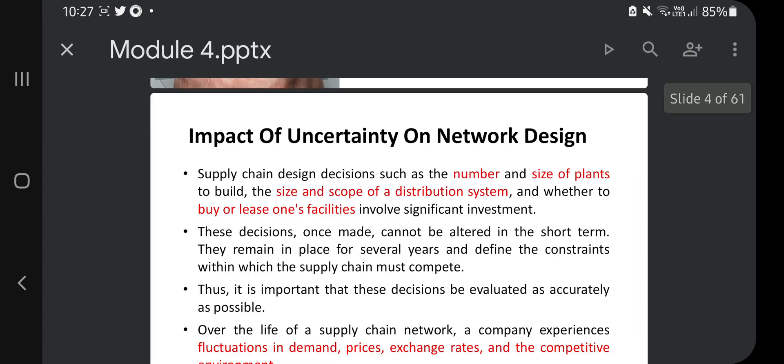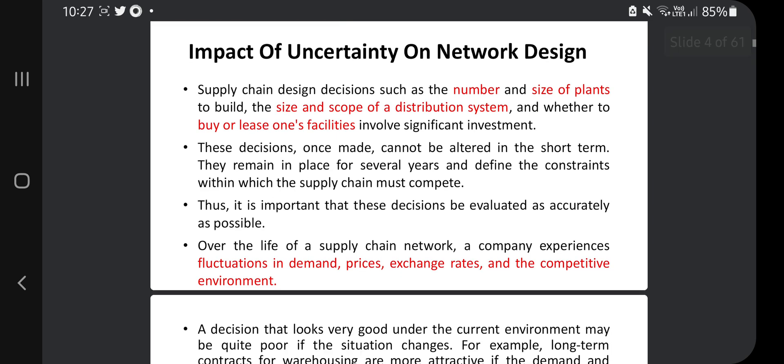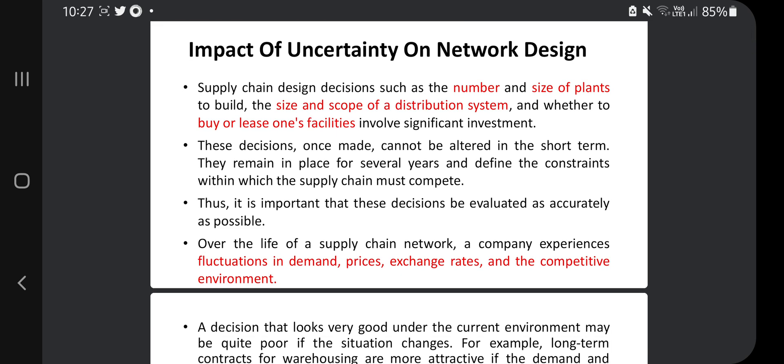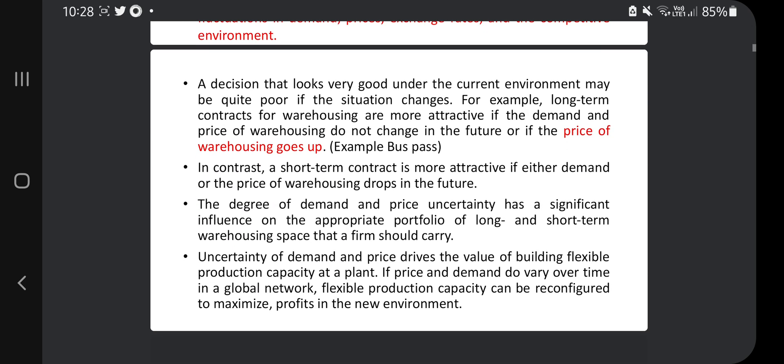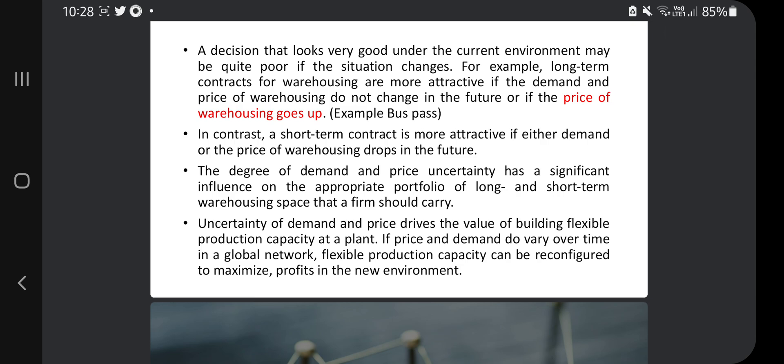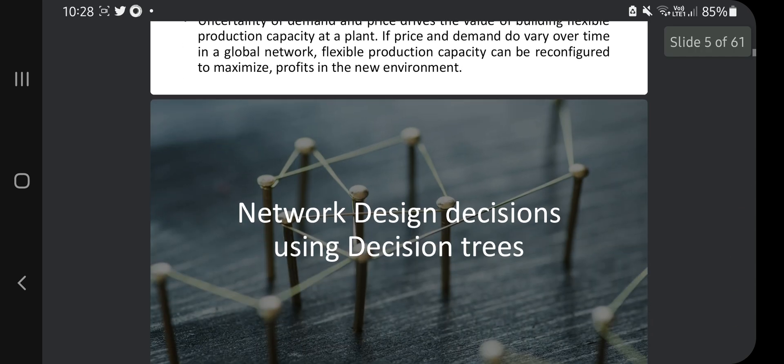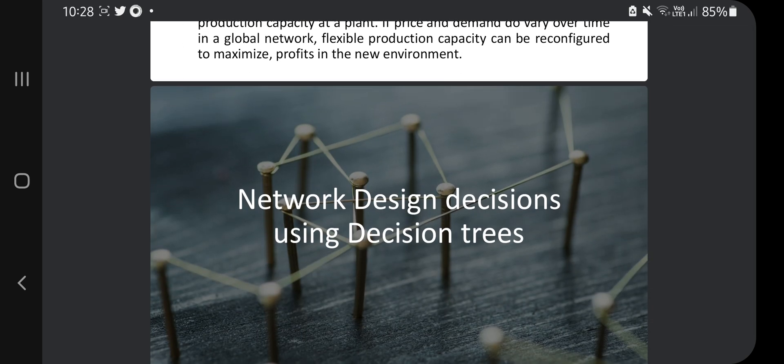So in module 4, the first one is the impact of uncertainty on network design. How does uncertainty affect the network design? That is present here, like the demands and the prices go up and down, the size and the scope varies as the market changes. That is the uncertainty and that's how the network design is getting affected. If you know this much, spend two or five minutes, you'll get to know the key points. Note it down. That's very important, otherwise you'll forget.